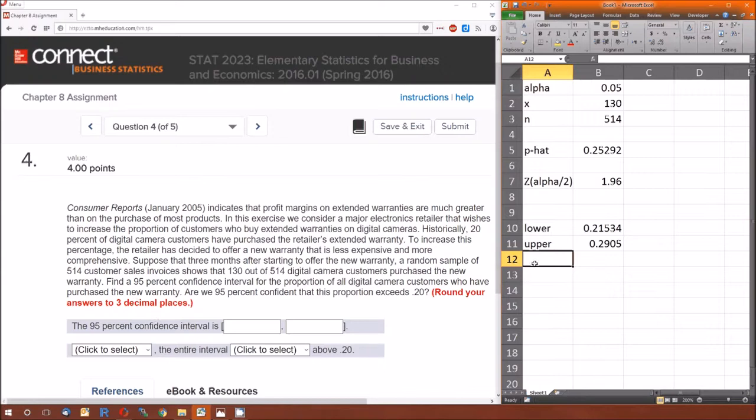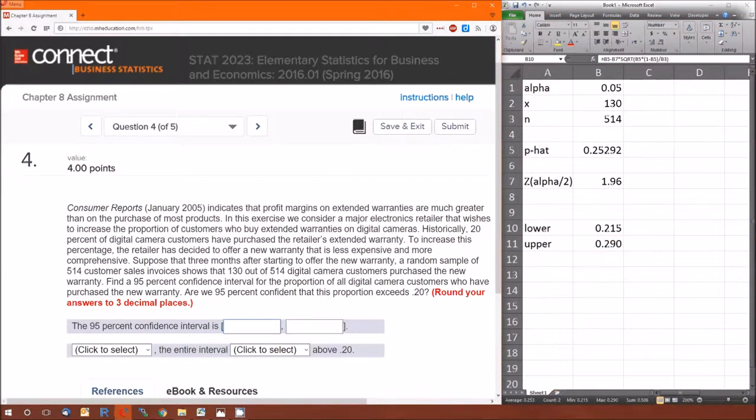Now we need to round the answers to three decimal places, so we'll have Excel do that for us. Let's plug in the numbers. 0.215, 0.290. Yes, we are confident because the entire interval is above that 20%. So this is how you calculate confidence intervals for one sample proportions.